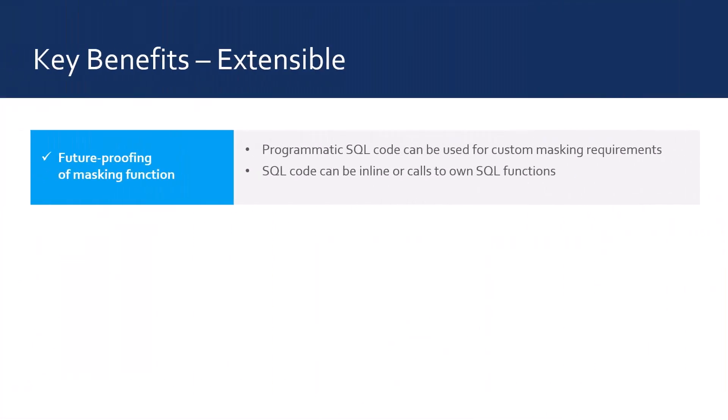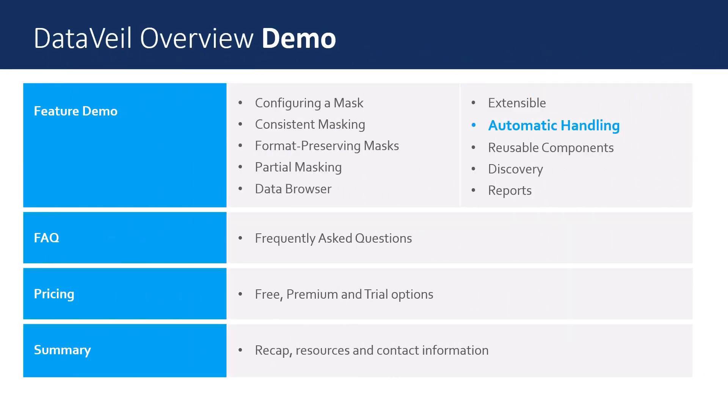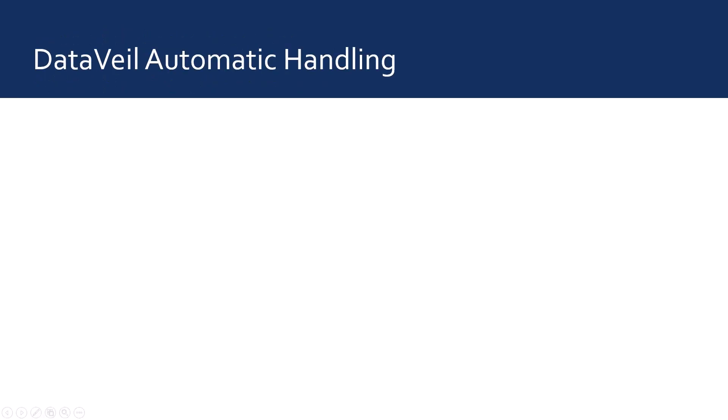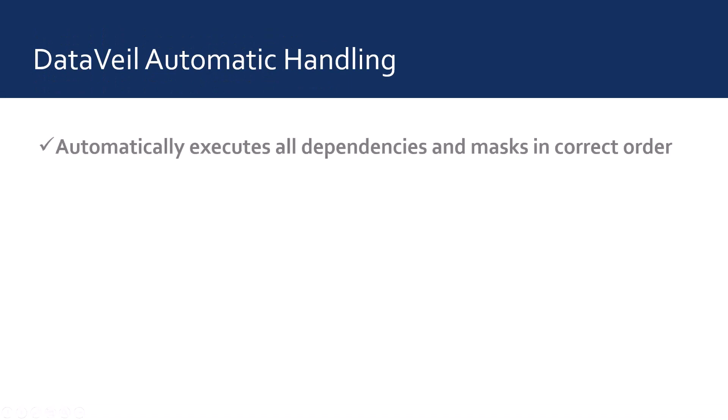DataVal enables the user to define custom masking functions using programmatic SQL, which effectively future-proofs DataVal in terms of the user's masking function requirements. Among the questions we often get are those related to masking coordination and setup tasks, such as how do I specify the order of columns to be masked — for instance, where the person name columns had to be masked before the user SQL mask could access those masked values to build its own masked values. And the answer is the user doesn't specify mask execution order. DataVal processes all dependencies and performs all masks in the correct order automatically.